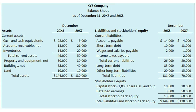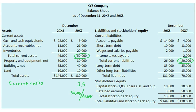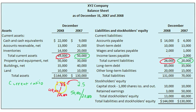XYZ's current ratio validates this drop in liquidity because it dropped from 2.5, which is computed as $50,000 in current assets divided by $20,000 in current liabilities, down to 1.88, which is $49,000 in current assets divided by $26,000 in current liabilities. This is a significant decline in liquidity. However, XYZ still has $1.88 of current assets for every $1 of current liabilities, so it is not too bad yet.